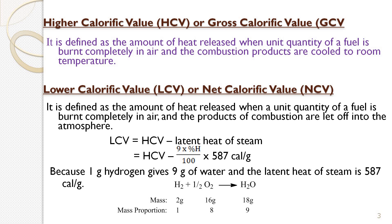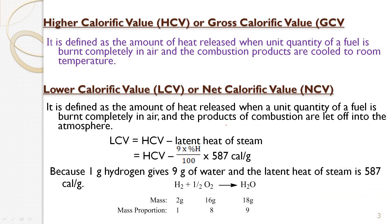Lower calorific value (LCV), also called net calorific value (NCV), is defined as the amount of heat released when a unit mass or unit volume of a fuel is burnt completely in air and the products of combustion are let off into the atmosphere. Here, we are allowing the latent heat of steam to escape from the total gross heat. So we subtract the latent heat of steam: LCV = HCV − latent heat of steam.